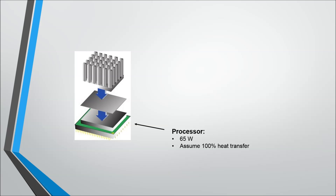Here we have a basic exploded view of the CPU assembly. We will be using an Intel i7 which has a power output of 65 watts. To simplify our model, we will assume that all of this power is directly converted into heat energy. On top of the processor there will be a steel enclosure, used to protect the chip as well as secure it in place. This enclosure will be made of stainless steel and will experience both conduction and convection heat transfer.